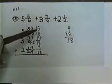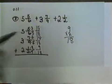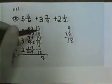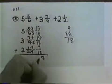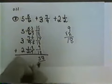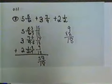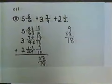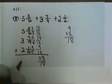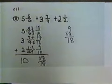So we have 15 eighteenths, 14 eighteenths, and 9 eighteenths. So if we add our numerators together, 5 and 4 is 9 and 9 is 18. We end up with 38 eighteenths. And over here, we add 5 and 3 is 8 and 2 is 10. So we have 10 and 38 eighteenths.